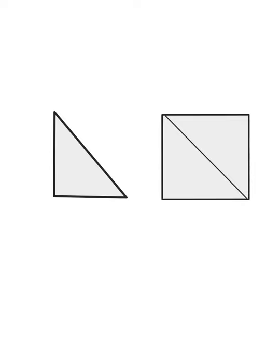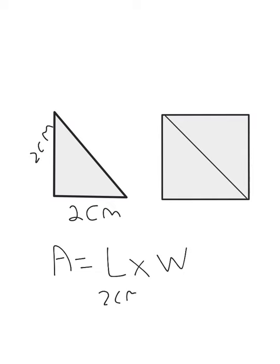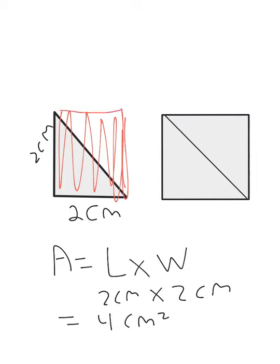In this video we're talking about the area of a triangle. We talked previously, when thinking about rectangles and squares, that area equals length times width. But if we did that here, if we said this was 2 centimeters and this was 2 centimeters, then we'd say 2 centimeters times 2 centimeters equals 4 centimeters squared. But that's going to give us the area of a square, and we don't want that.